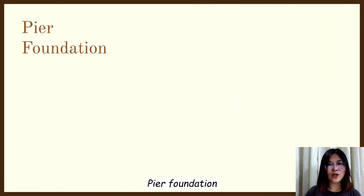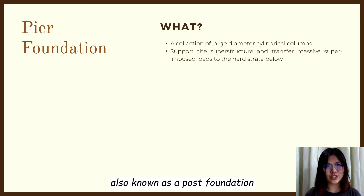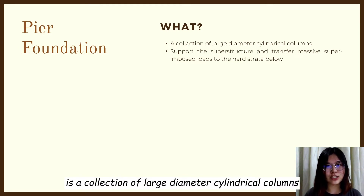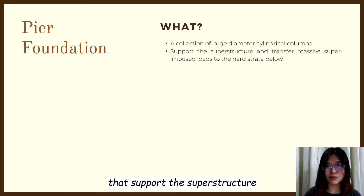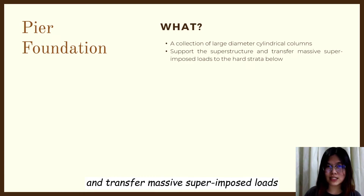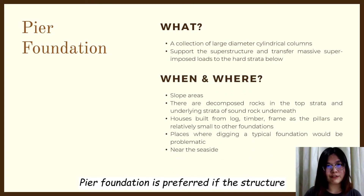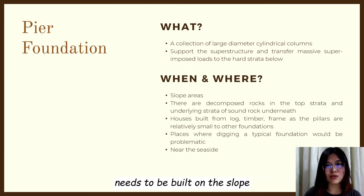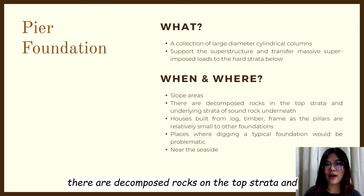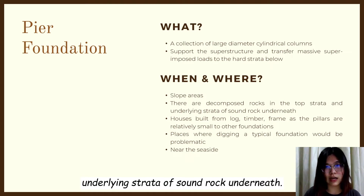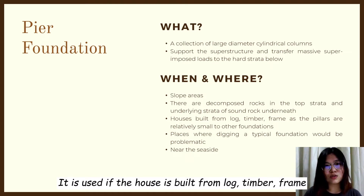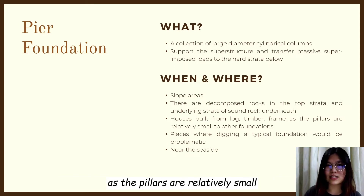Pier Foundation, also known as a post foundation, is a collection of large diameter cylindrical columns that support the superstructure and transfer massive superimposed loads to the hard strata below. Pier foundation is used if the structure needs to be built on a slope, when there are decomposed rock on the top strata and underlying strata of some rock underneath, or if the house is built from lock, timber frame, as the pillars are relatively small compared to other foundations.